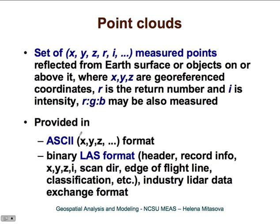So what are point clouds? Point clouds are sets of three-dimensional points given by their XYZ coordinates, and usually the point clouds have some additional information about the individual points — that may be the return number R and also intensity. So we get the position of the point in three-dimensional space, the return number, its intensity, and also color may be provided. These data are usually provided either in ASCII format as XYZ coordinates and whatever other values are provided, or in a binary LAS format.